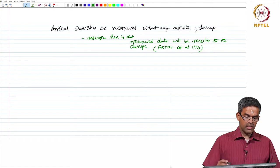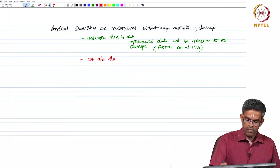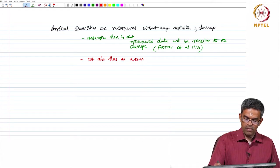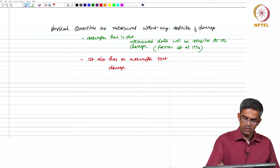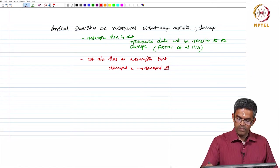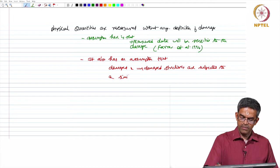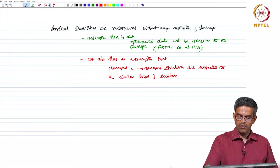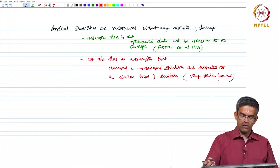It also has an assumption that the damaged and undamaged structures are subjected to a similar kind of excitation, which is a very serious limitation, at least more serious compared to the earlier one.